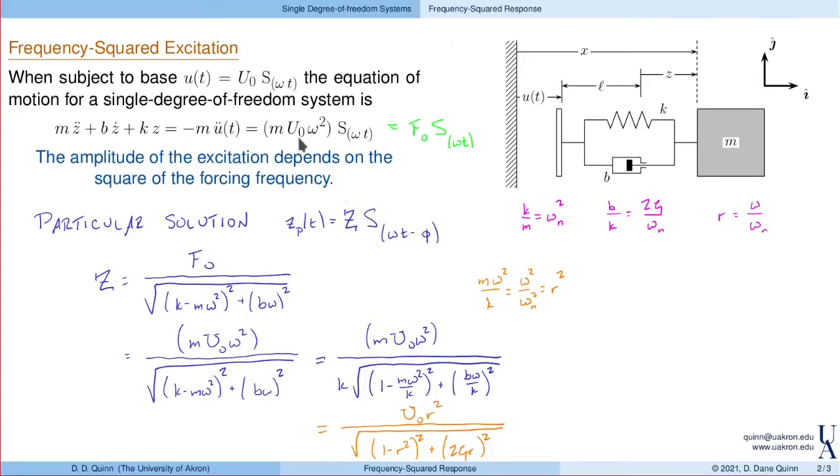What about the phase shift? The phase shift did not depend on the amplitude, so the phase shift for this response is exactly the same as the phase shift when we had constant amplitude forcing. Recall that the tangent of phi was b omega divided by k minus m omega squared, or in terms of damping ratio and frequency ratio, 2 zeta r divided by 1 minus r squared. This phase shift is identical to constant amplitude forcing or constant amplitude excitation.